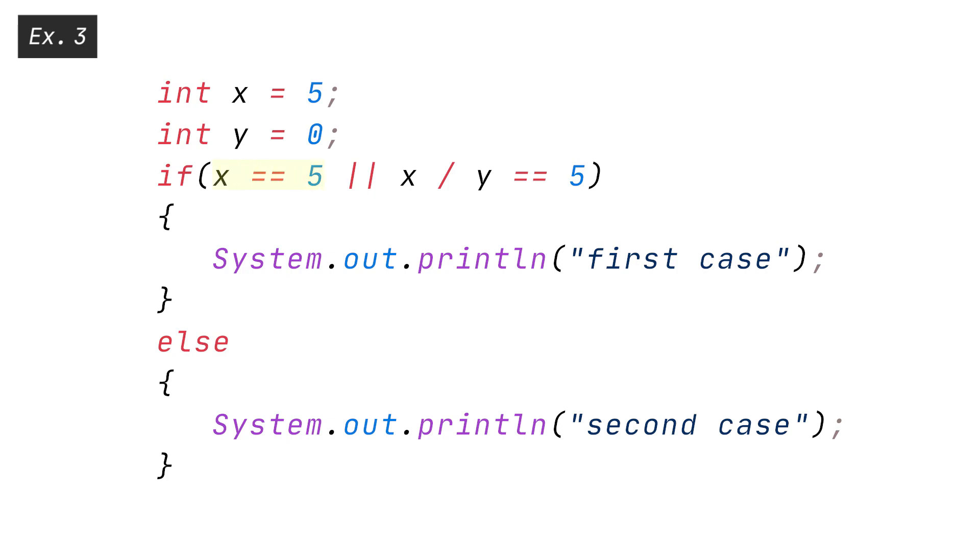When X equals equals 5 returns true, the OR OR operator stops evaluation. This is good, because we avoided the operation X divided by Y, which would cause a runtime error by dividing by 0.